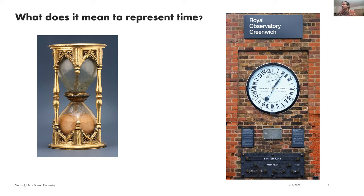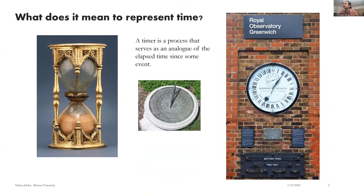My loose definition: a timer is a process that serves as an analog of the elapsed time since some event. A sundial itself does not change, so it's not actually making any analog — that's a nice thing to keep in mind. When experimentalists try to learn how animals learn timing, they have to be careful the animal isn't just using a cue, because animals will often find an easier way of performing the task. This is why behavioral studies use random inter-trial intervals and similar controls.